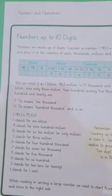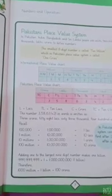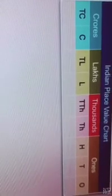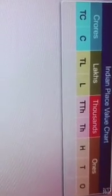In previous lecture we read about international place value system in which the periods are units, thousands, millions and billions. But the Pakistani place value system is quite different from international place value system.